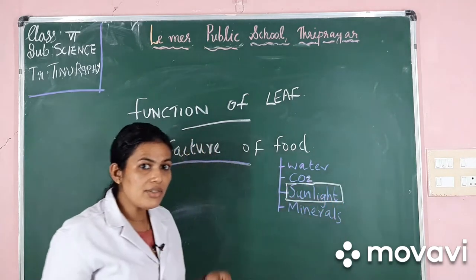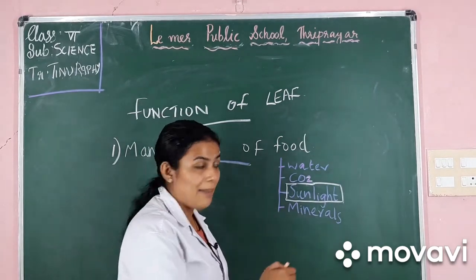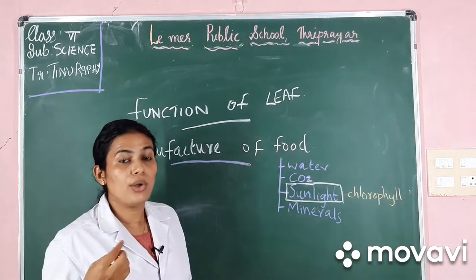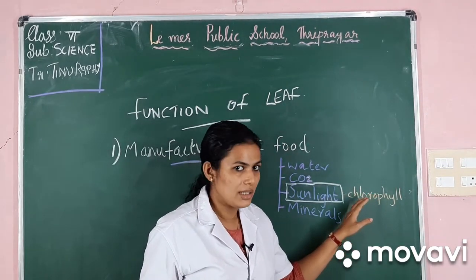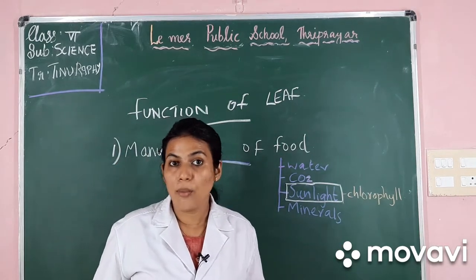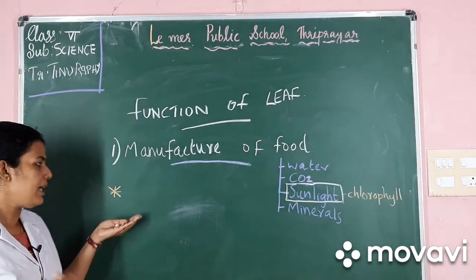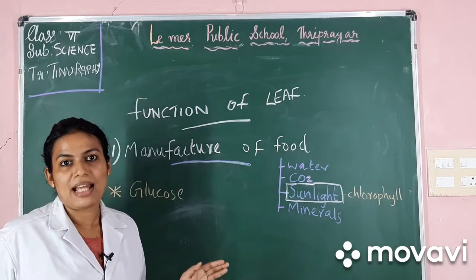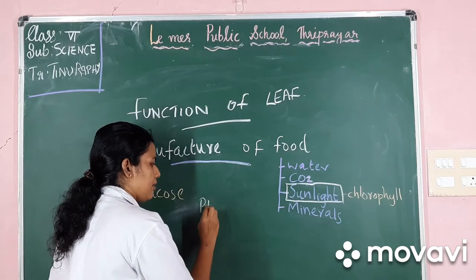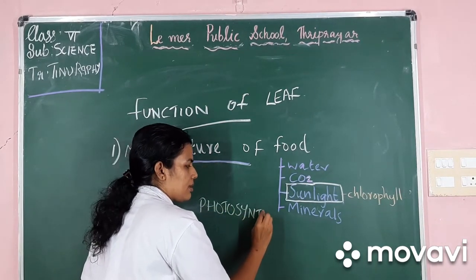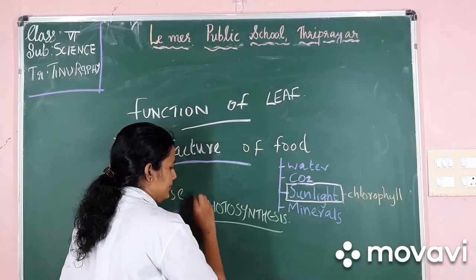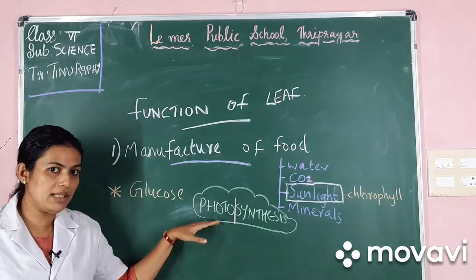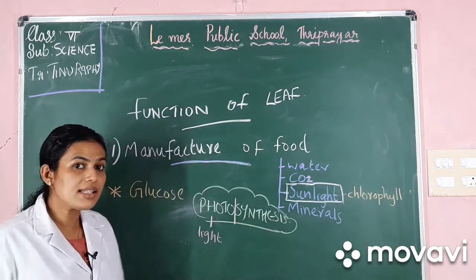Sunlight provides energy for the preparation of food, and sunlight is trapped in the chlorophyll present in the leaf. The plants prepare food in the form of glucose — a simple form of sugar. The process of making food by green plants is called photosynthesis. Photosynthesis is a combination of the words photo and synthesis.